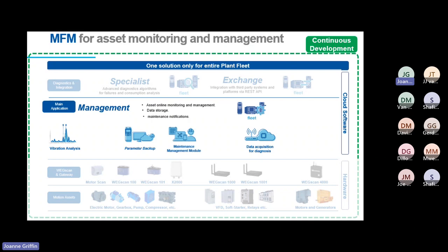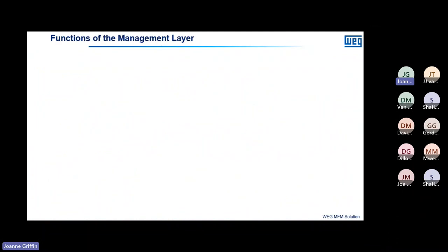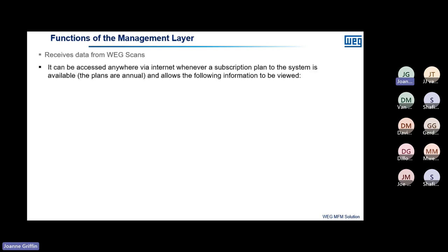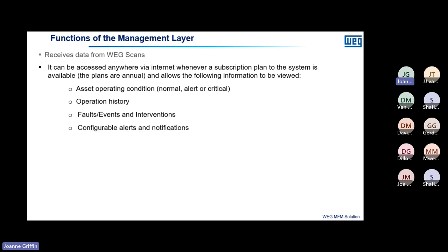The management software performs asset online management, data storage, maintenance reports, and provides intuitive dashboards. Its functions include receiving data from the sensors and allowing you to set asset operation condition thresholds — the level at which you want to be notified whether the asset is normal, warning, or critical. You can configure these yourself. People with experience with their own machines will know how to set the levels at which they should receive these notifications.